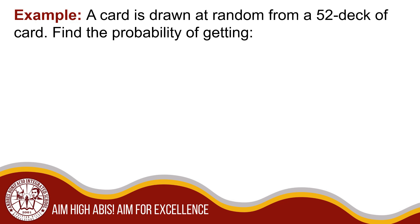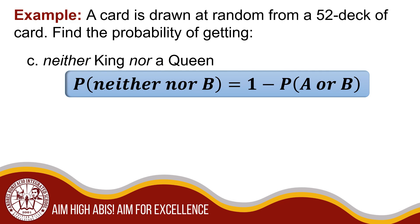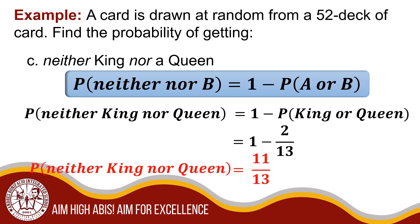There are instances that both events — the probability of A or B — are not going to occur. For example, a card is drawn at random from a 52-card deck. Find the probability of getting neither A nor B, or not A and not B. First, find the probability of A union B: 4 over 52 plus 4 over 52 equals 8 over 52, or 2 out of 13. Then, the probability of neither A nor B is 1 minus the probability of A union B: 1 minus 2 over 13, which equals 11 over 13.